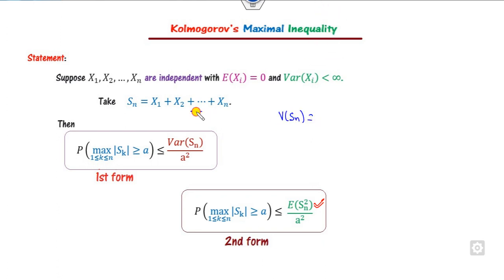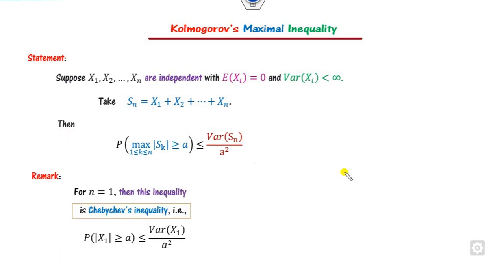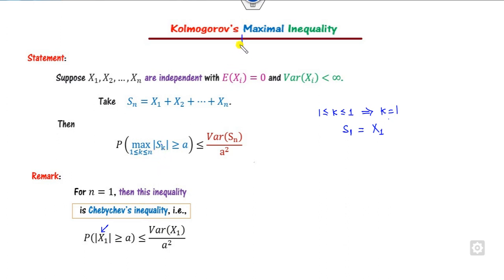Furthermore, since the X_i are independent, Var(S_n) = Σ Var(X_i) for i from 1 to n. This gives the third form of the Kolmogorov maximal inequality. If you consider n = 1, then k = 1, so S_k = S_1 = X_1. In that case the inequality reduces to the Chebyshev inequality. So the Chebyshev inequality is a particular case of the Kolmogorov maximal inequality, and this inequality is a generalization of the Chebyshev inequality.